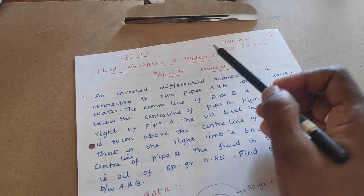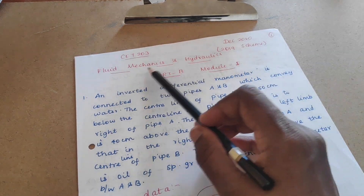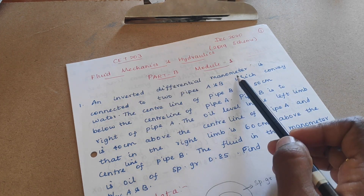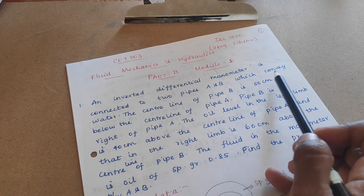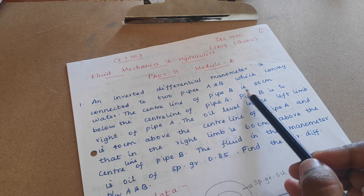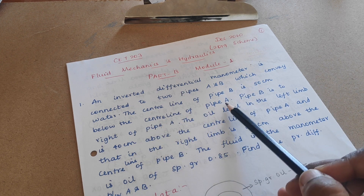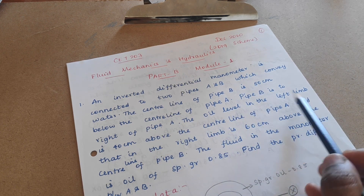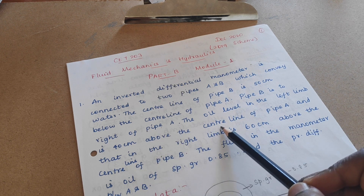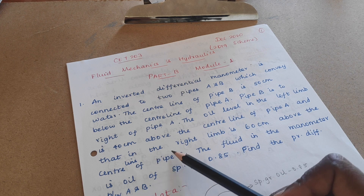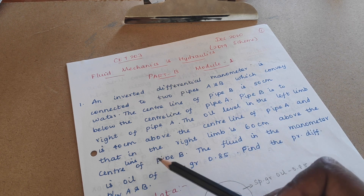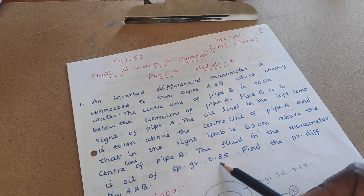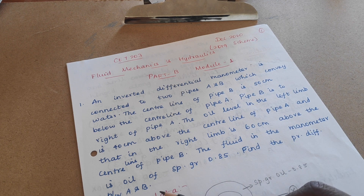In this video, we are going to talk about fluid mechanics — a December 2019 question. An inverted differential manometer is connected to two pipes A and B which convey water. The center line of pipe B is 50 cm below the center line of pipe A, and pipe B is to the right of pipe A. The oil level in the left limb is 40 cm above the center line of pipe A, and in the right limb it is 60 cm above the center line of pipe B. The fluid in the manometer is oil of specific gravity 0.85. Find the pressure difference between A and B.